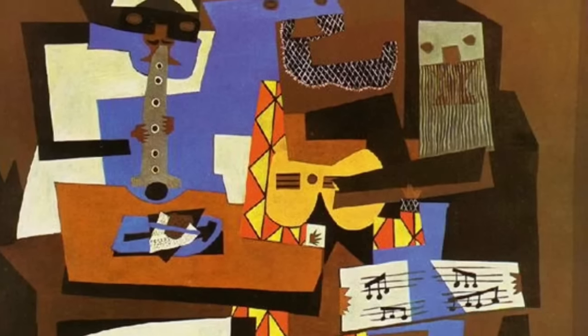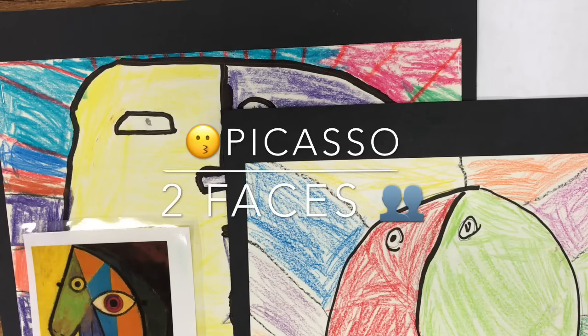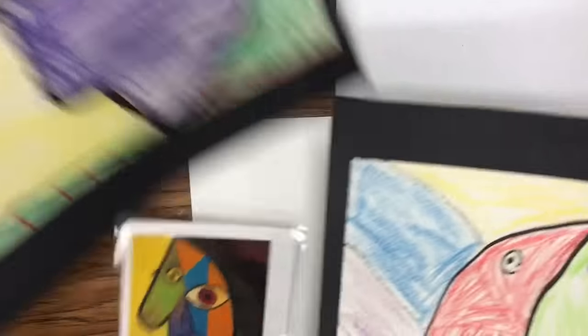It had a lot to do with kind of almost like shapes and symbols. Some of them intertwined in faces so this is kind of a Picasso two-face project. So that is what we're gonna do today, so let me get this stuff out of the way.